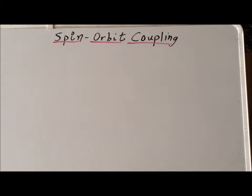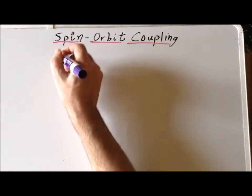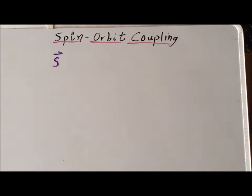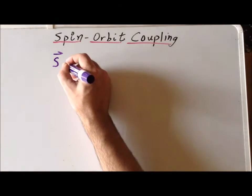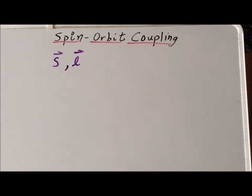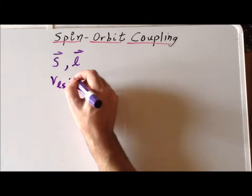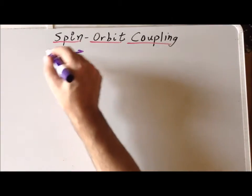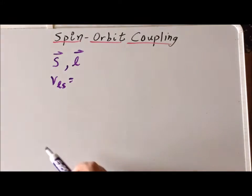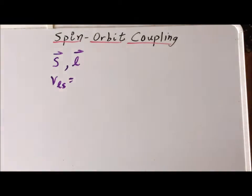We recall that atoms have two different types of angular momentum. One type, which we denote by S, is the spin angular momentum. The second type, which we represent by a small l, is the orbital angular momentum. The total energy of interaction of these can be written as the interaction of the magnetic moment related to the spin of the electron interacting with the magnetic moment of the orbital angular momentum.